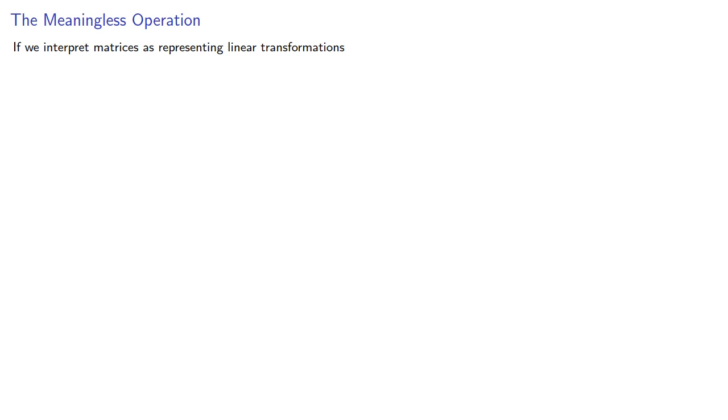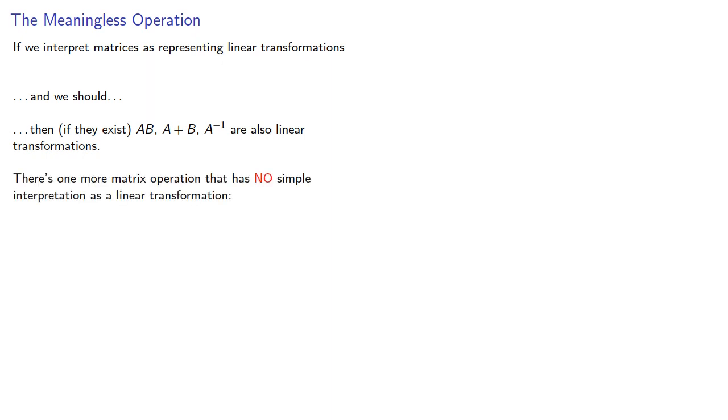If we interpret matrices as representing linear transformations, and we should, then if they exist, AB, A plus B, and A inverse are also linear transformations. There's one more matrix operation that has no simple interpretation as a linear transformation, and that's the transpose of a matrix.